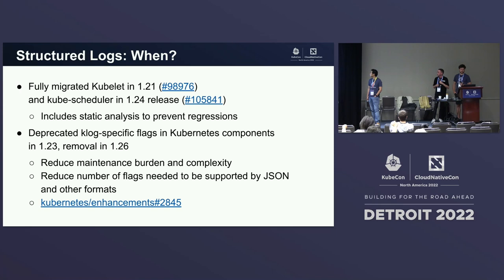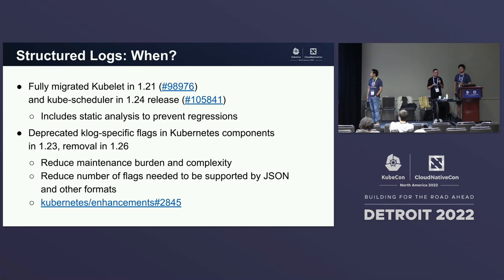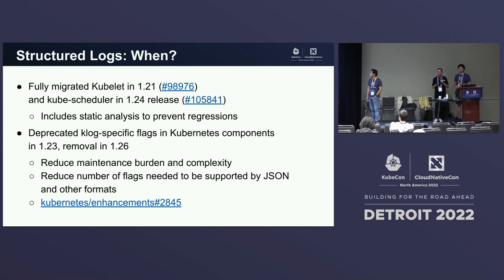One effort we found while doing structured logging was that klog, our logging tool, has many flags that may not be meaningful nowadays and that belong more on the logging platform than the logging client. We've initiated a deprecation and removal in all Kubernetes components — these flags will be removed in 1.26. Component owners still using these flags should be aware. Normal klog users won't be affected, as we're only doing this for Kubernetes components, to reduce the maintenance burden.